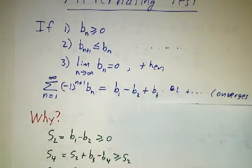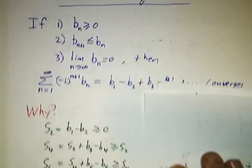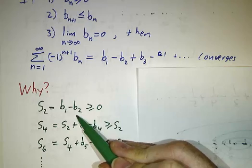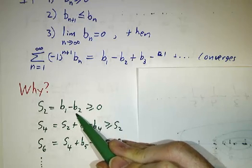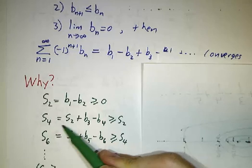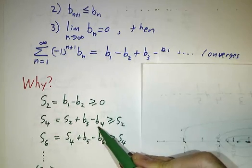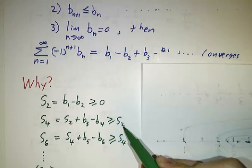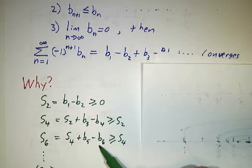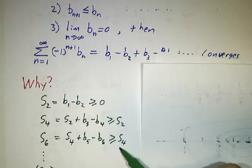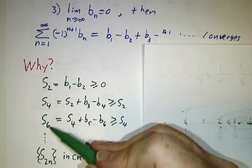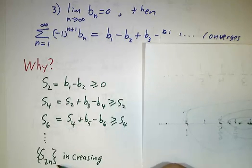Let's see why it works. First, look at the even partial sums. s2 = b1 − b2, and since b1 > b2, that's positive. s4 = s2 + (b3 − b4), and since b3 > b4, s4 > s2. Then you add b5 and subtract b6, getting something bigger than s4. So s2, s4, s6, s8, s10 keep increasing — they get bigger and bigger. By the monotone convergence theorem, this sequence converges to some number.